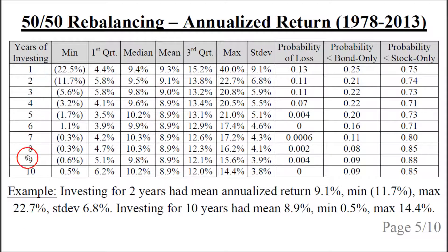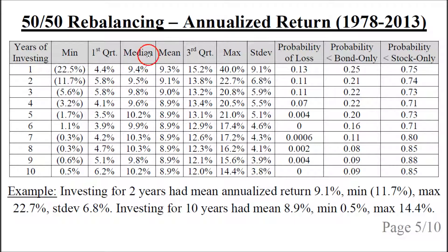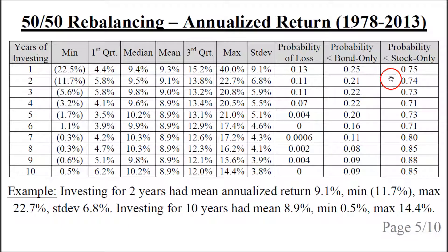In the table, we have the years of investing, the minimum annualized return, the mean, the median, the maximum, the quartiles, the standard deviation, and some probabilities which will be described in more detail in another slide.